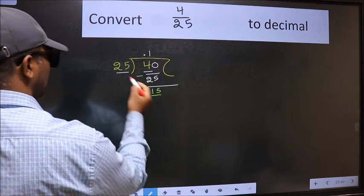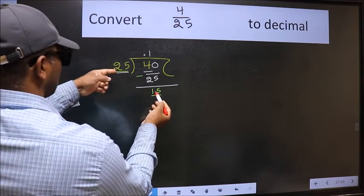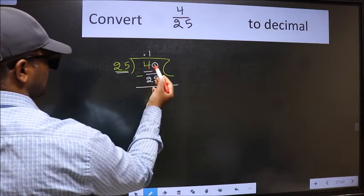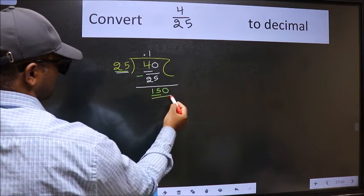Here we have 15 and here 25. 15 is smaller than 25. And we already have the decimal, so this time we can directly take 0. So 150.